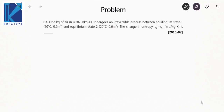Let's move on to the next question. One kilogram of air undergoes an irreversible process between equilibrium states. State one is 20 degrees Celsius and 0.9 cubic meters; state two conditions are also given. You have to find the change in entropy S2 minus S1 in joule per kilogram Kelvin, that is the change in specific entropy.